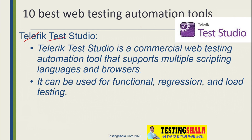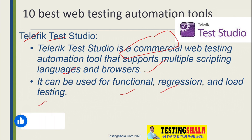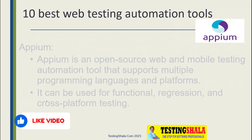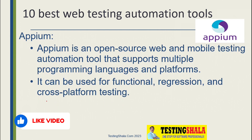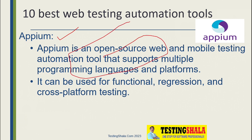The next type of automation tool is Telerik. Telerik Test Studio is another commercial automation tool. It supports multiple scripting languages and browsers. We can use it for functional regression as well as load testing using this Telerik automation tool.